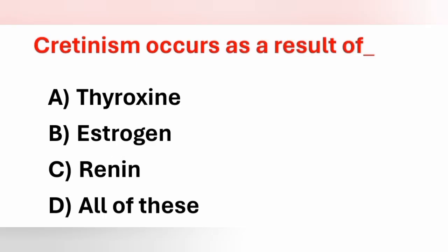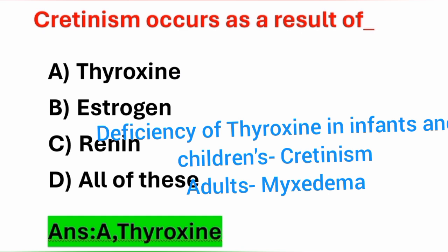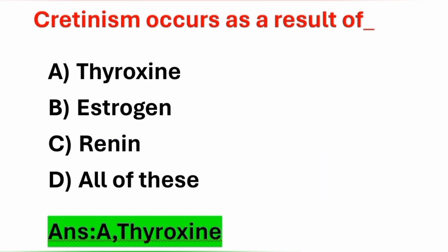Next question: cretinism occurs as a result of — option A: thyroxine deficiency, option B: estrogen, option C: renin, option D: all of these. The answer is option A, thyroxine. Deficiency of thyroxine in infants and children causes cretinism. Deficiency of thyroxine in adults causes myxedema, and excessive production of thyroxine in adults causes Graves' disease.